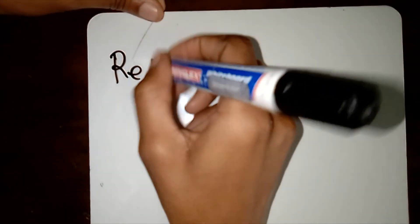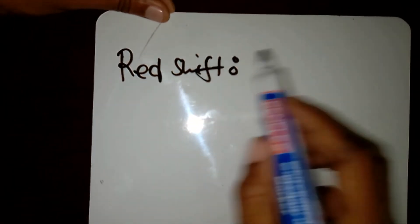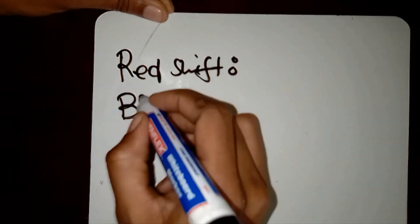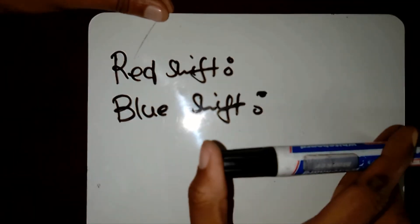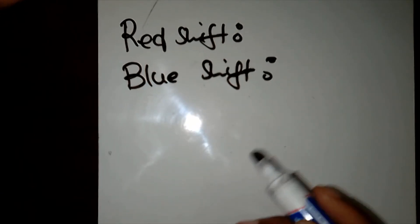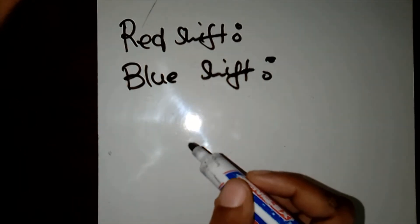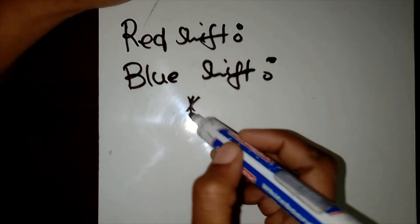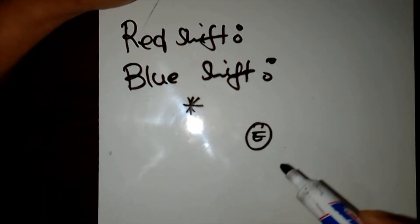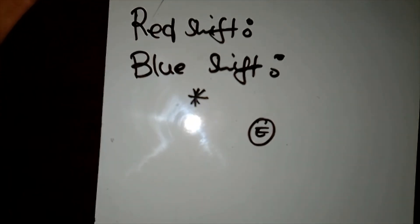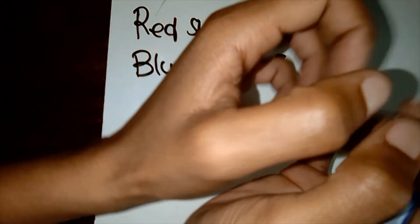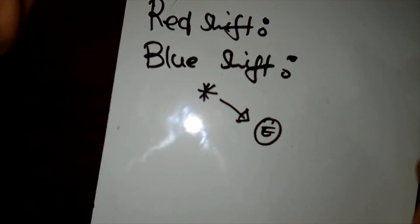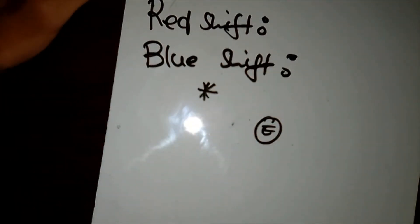So now let us define the two important terms. Red shift can be defined as an object moving away from the observer. Blue shift can be defined as an object moving towards the observer. Because most stars in the universe exhibit a red shift, we conclude that they are actually moving away. And thus we can conclude that the universe is in actual fact expanding — because if it were constricting, the stars would be moving towards us, but because it's expanding, they are moving away.